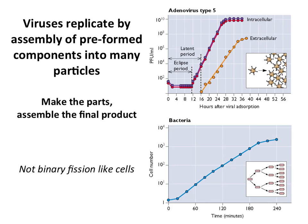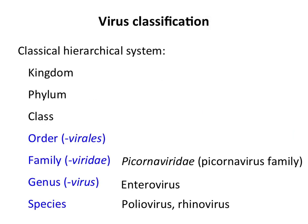An important point: viruses multiply by assembly lines, not binary fission. If you inoculate a culture with a single bacterium, after a suitable time the bacterium divides into two, then four, eight, sixteen — binary fission. When viruses were first discovered many people thought this was how they multiplied, but it's not true. When a virus infects a cell it makes components to assemble many many new viruses, not just two. You make the parts, assemble the final product. We will look at the replication of viruses in a few lectures to understand how we learned that. Viruses don't use binary fission — they are assembled in a stepwise fashion.